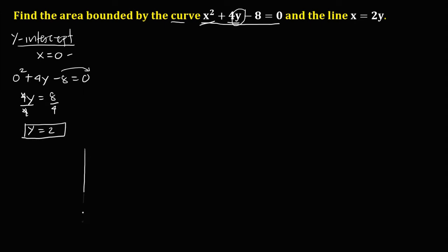Then plot this point on a graph. This is the y-axis and this is the x-axis. Since x equals 0 and y equals 2, the point is (0, 2).